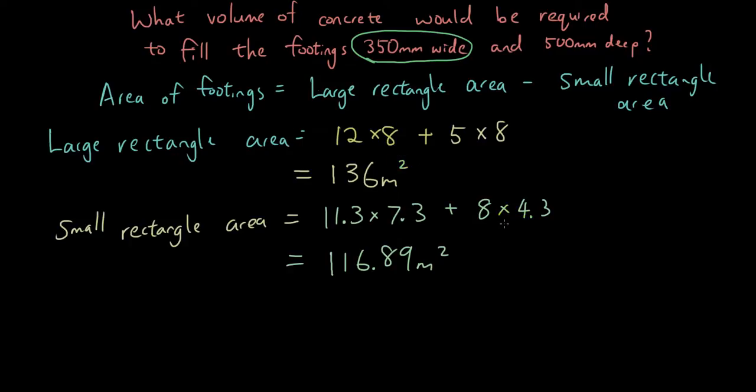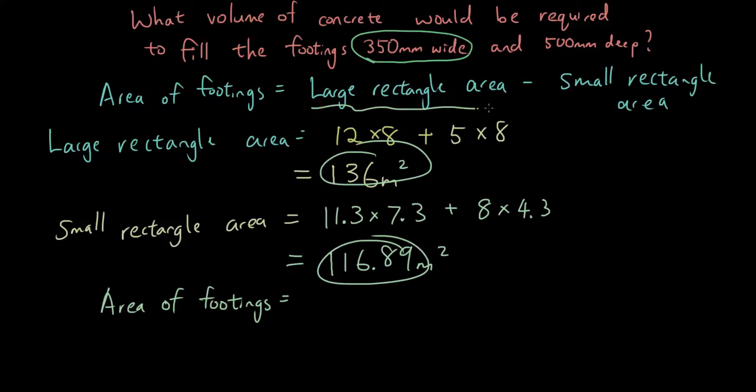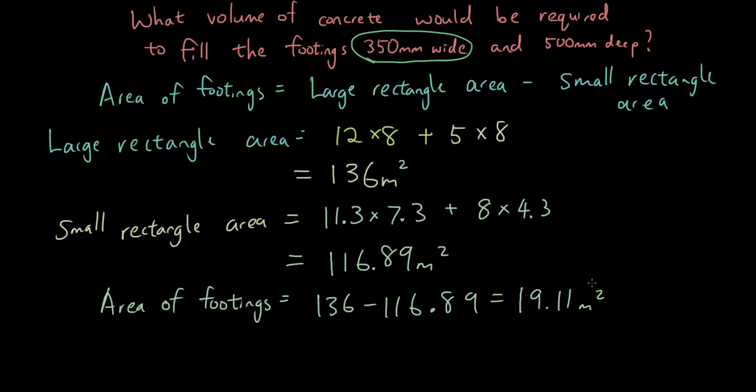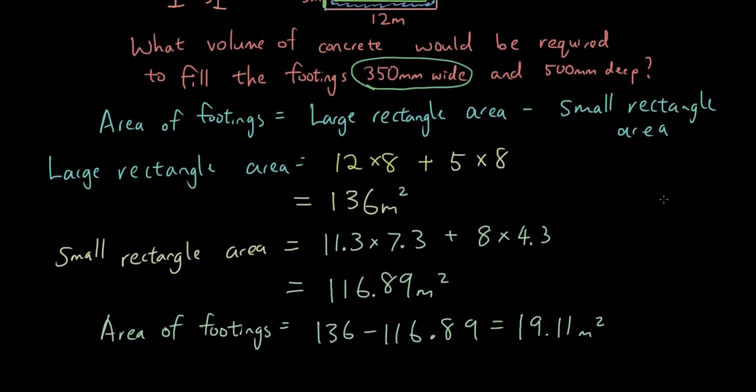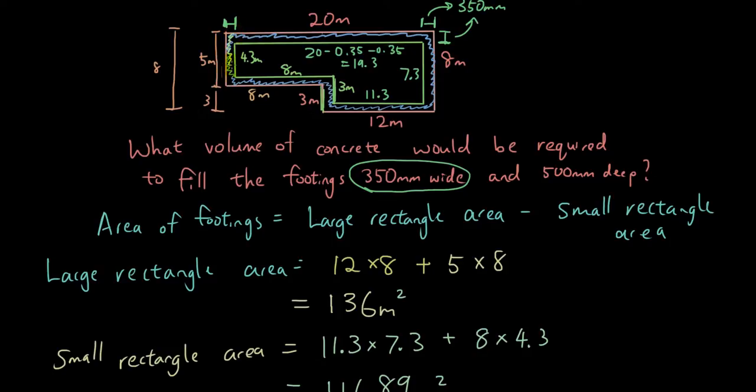So the total area. Sorry. The area of the footings. Is going to be the large rectangle minus the small rectangle as I've mentioned over here. So it's 136 minus 116.89. And the answer is 19.11 meters squared is the area, the shaded area. Okay. Shaded area has been found.